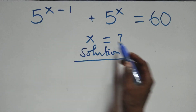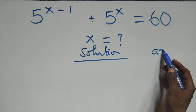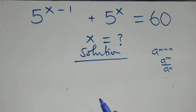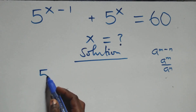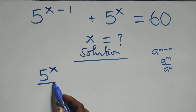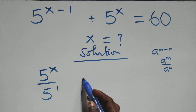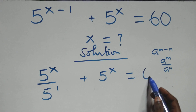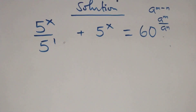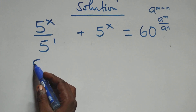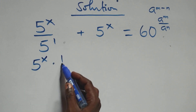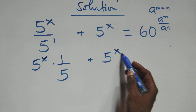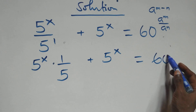What we have here: this follows when we have a raised to power n minus n, which is the same as a raised to power n over a raised to power n. So this becomes 5 raised to power x over 5 raised to power 1, then plus 5 raised to power x, equals 60. We can express this as 5 raised to power x times 1 over 5, then plus 5 raised to power x equals 60.